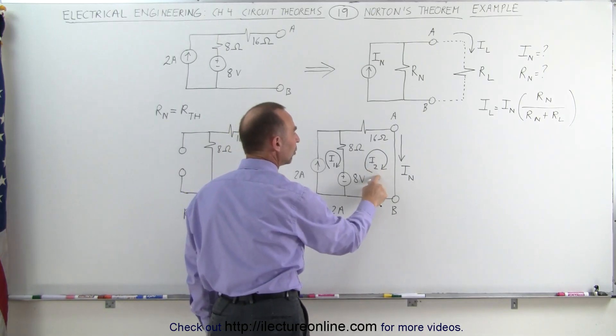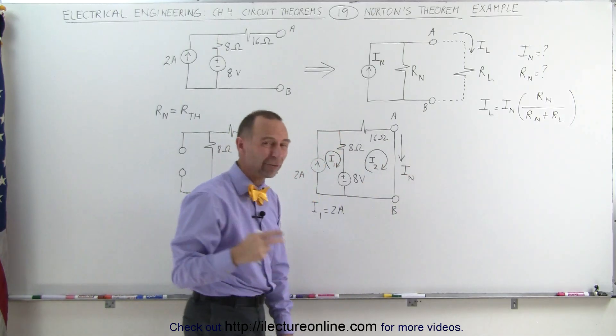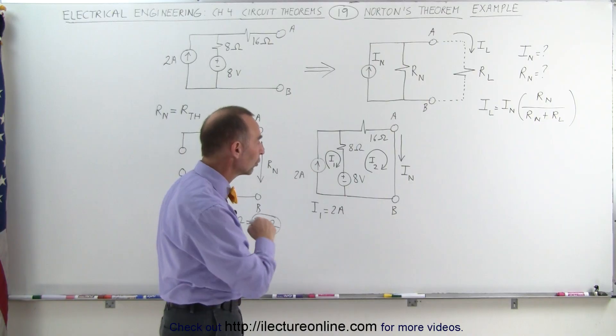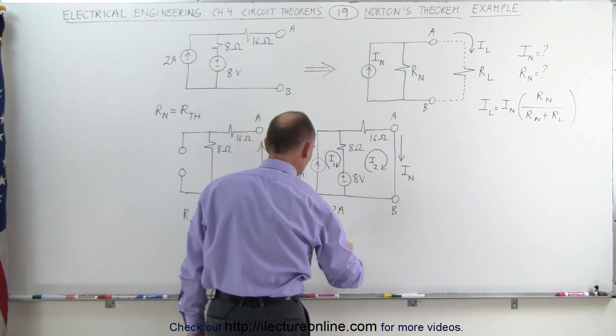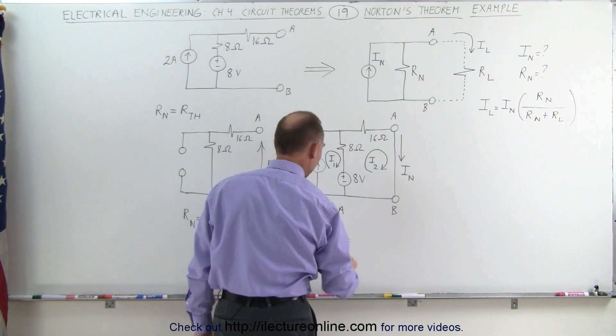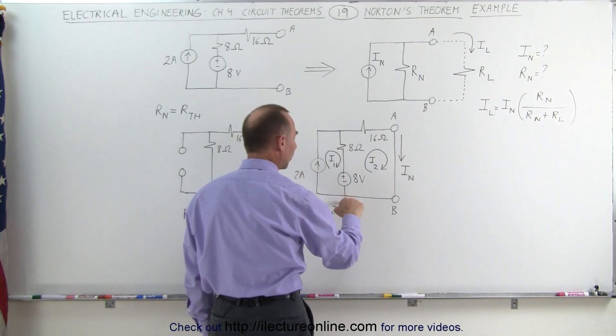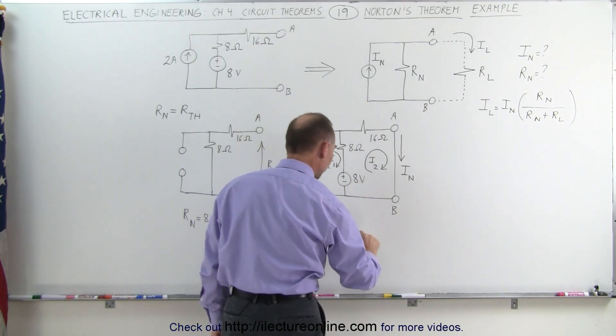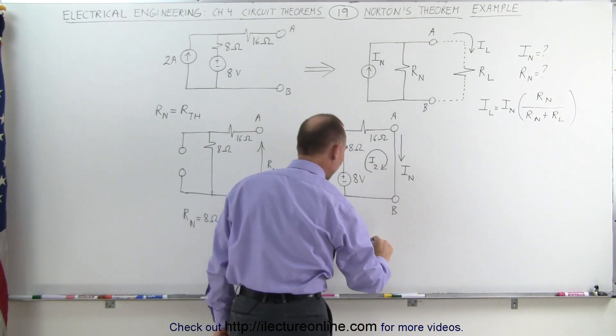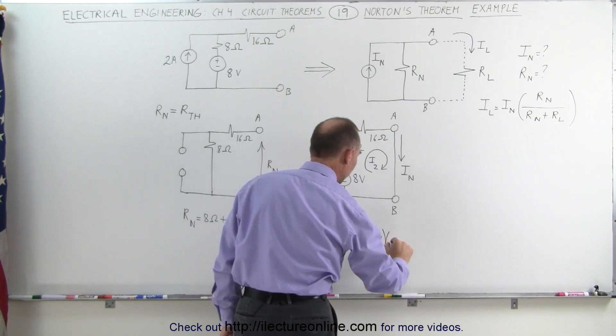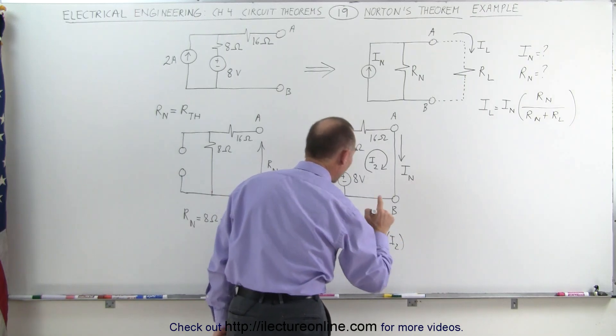assuming that we have a current I2 flowing through loop 2. Now notice that I2 will be equal to I sub n, so all we have to do here is find I2. We're going to sum up the voltages around loop 2. And that is equal to, starting from this point, that's plus 8 volts, minus the voltage drop across this resistor,